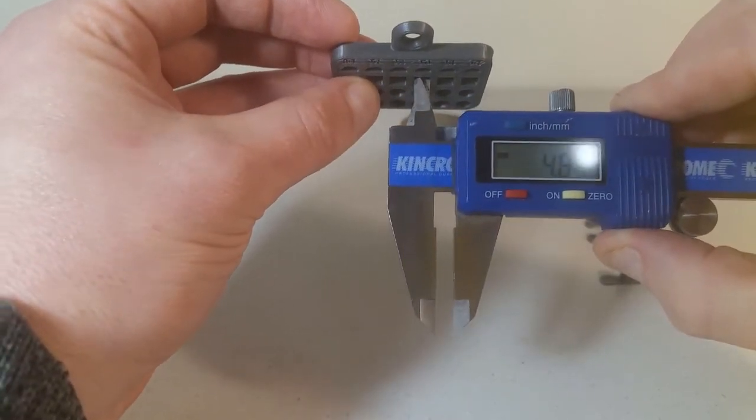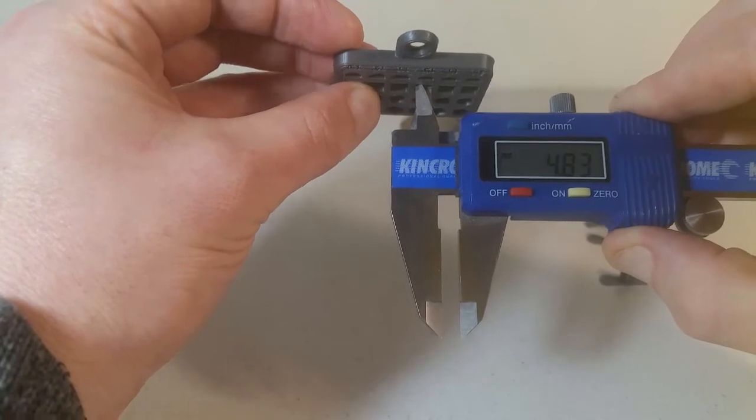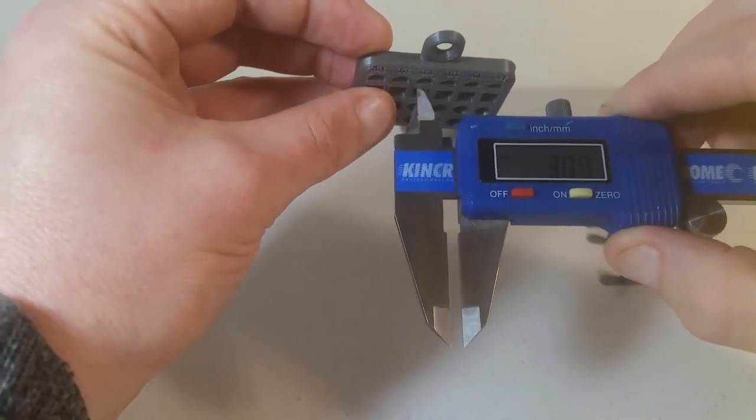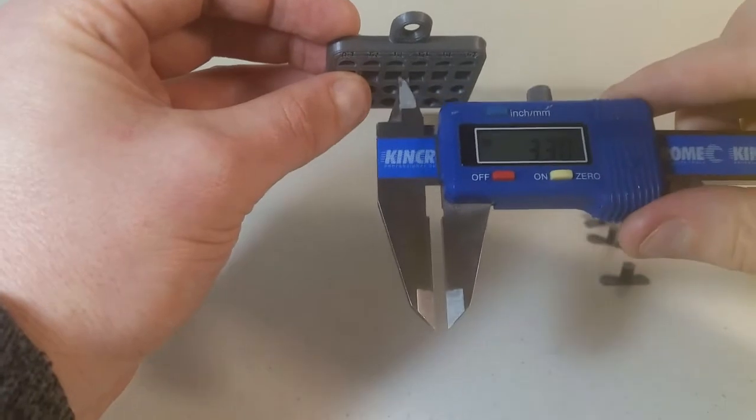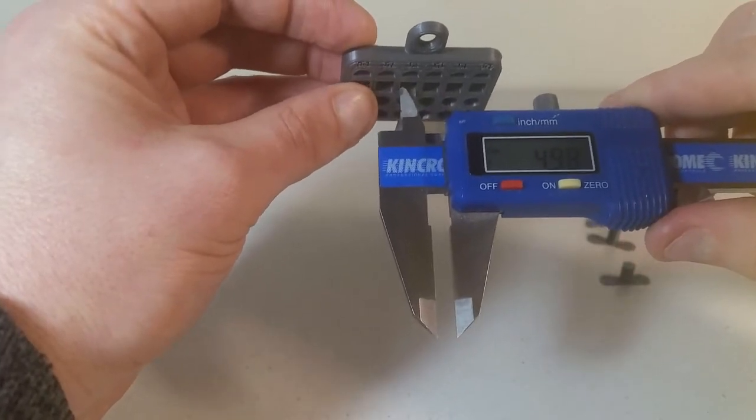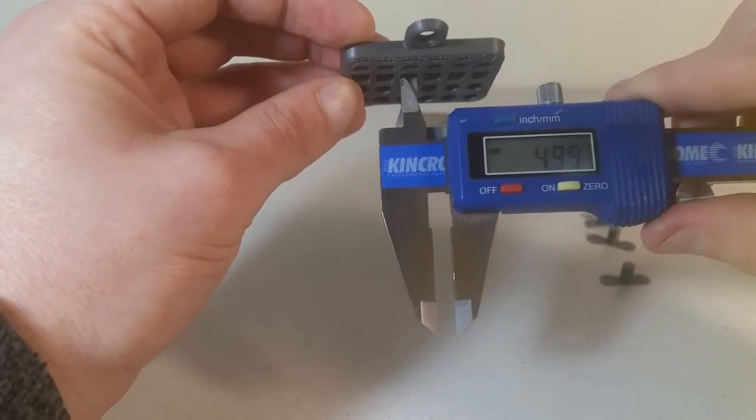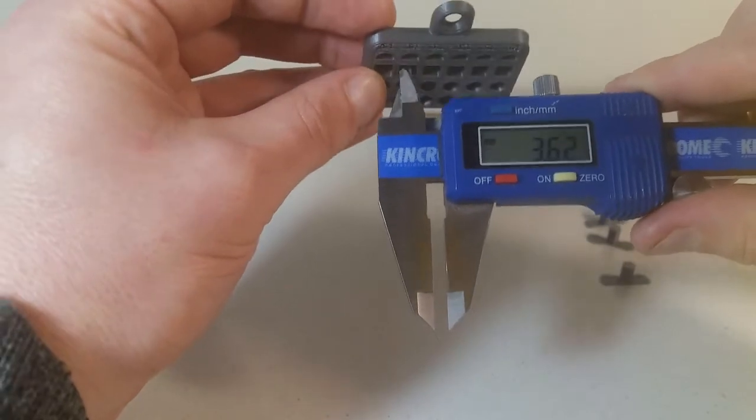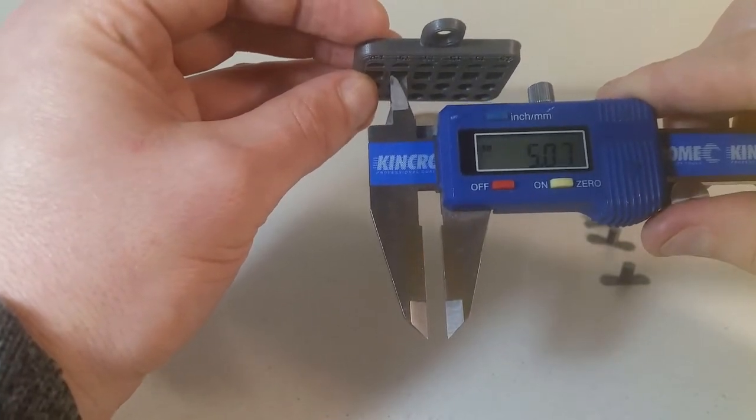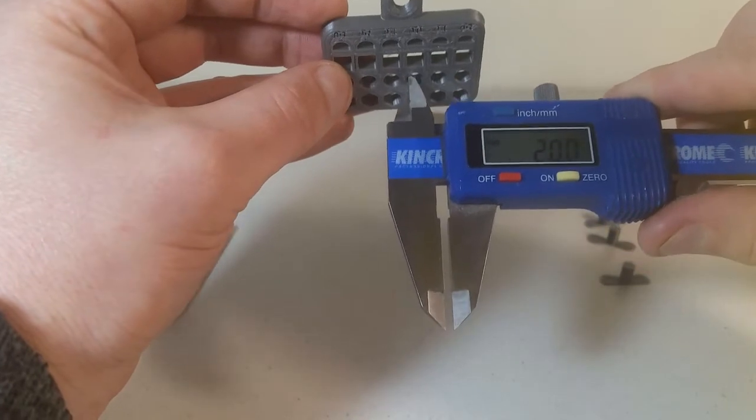Using the calipers to check the 5 millimeter square hole, it turned out to be 4.83 millimeters, which is a margin of error of 0.17 millimeters which is pretty good. The next hole is 4.99 instead of 5.1 which is 0.11, 5.07 instead of 5.2 which is 0.13.